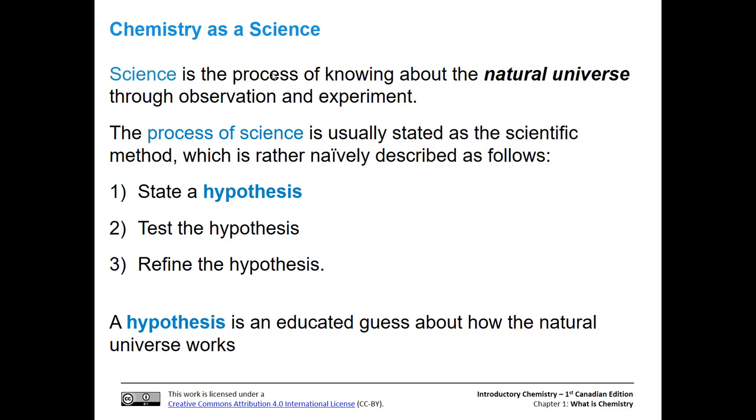Basically, science deals with the natural universe and we learn about it through observation and experiment. A process for science can be described as the scientific method and a simple way to explain that is, first we're going to state a hypothesis, next we're going to test the hypothesis, and then we're going to refine it.